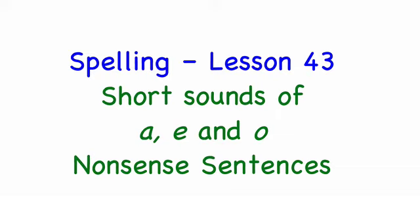This is spelling lesson 43. It's a dictation exercise with nonsense sentences, and the nonsense words in these sentences will contain either a, e, or o, each vowel representing its short sound.